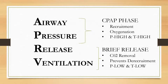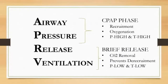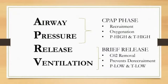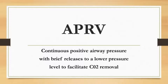When we look at airway pressure release ventilation, there are two aspects to this mode. There's the airway pressure — a CPAP phase that aids in recruitment of the alveoli and helps oxygenation. This CPAP phase is controlled by settings called P-high and T-high. There's also the release ventilation aspect, which is a brief release from the P-high setting to facilitate CO2 removal and prevent derecruitment. The pressure low and time low — referred to as P-low and T-low — control the release ventilation phase.